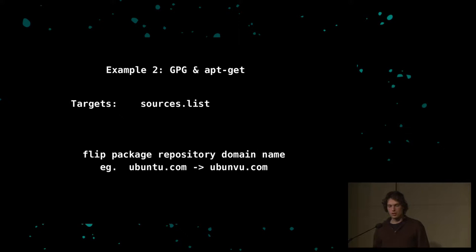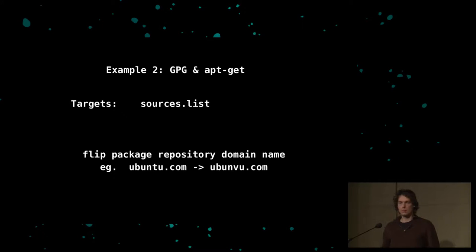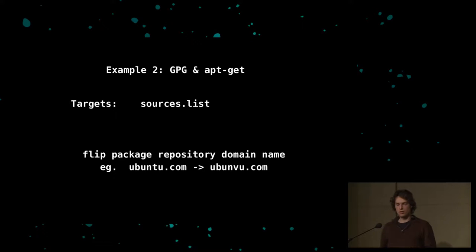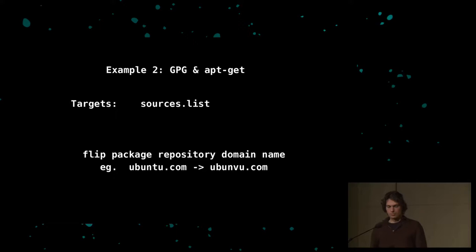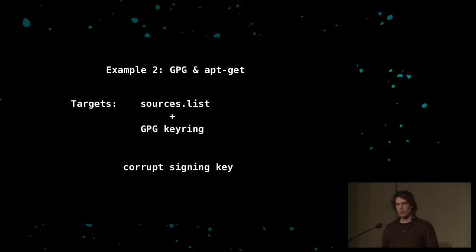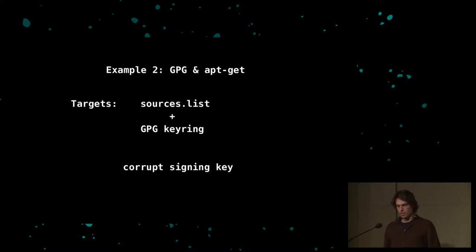A second example targets GPG and apt-get to exploit the update mechanism in Debian or Ubuntu. This is a two-stage attack: first we corrupt the sources.list file to redirect the update repository to a domain we control. Then we corrupt a bit in the GPG keyring to corrupt the signing key to one we can reconstruct. This lets us backdoor packages being installed. We have a demo for this as well.